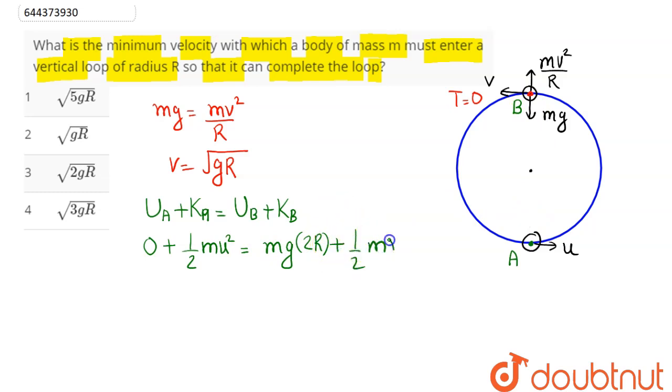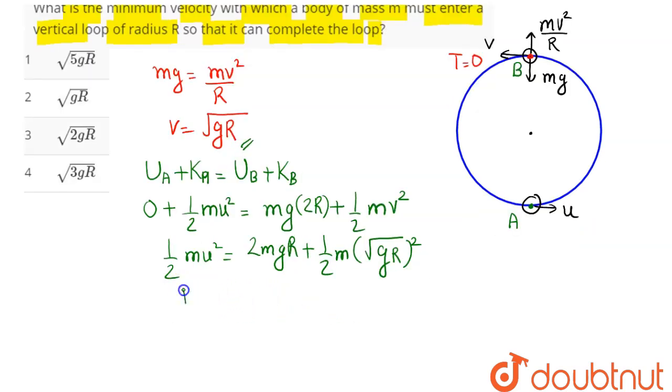Hence this comes as half m u squared equals 2mgR plus we can say half m v squared, where v is root under gR whole squared. So this here comes out to be half m u squared equals 2mgR plus here this is equal to half mgR.